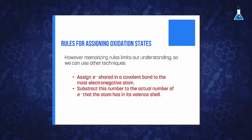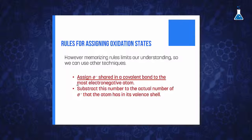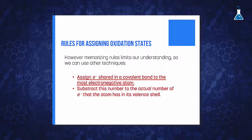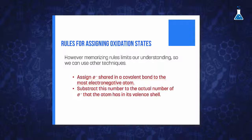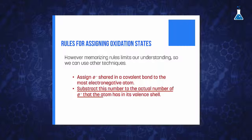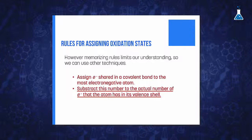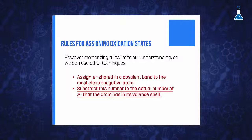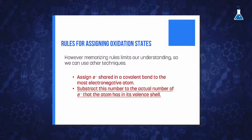An easy procedure is to assign the electrons shared in a covalent bond between two elements to the more electronegative atom. Then, if we calculate the difference with the valence electrons the atom actually has in its valence shell, we can determine the oxidation number.